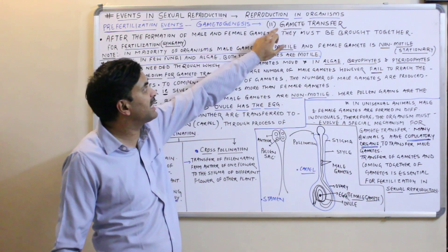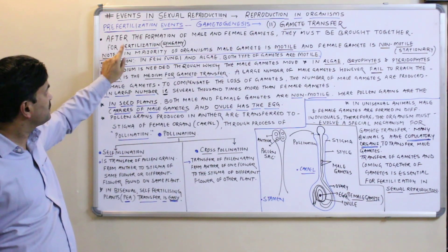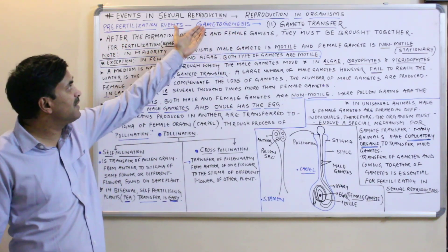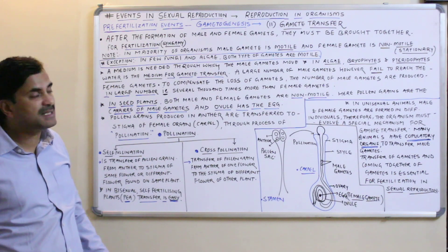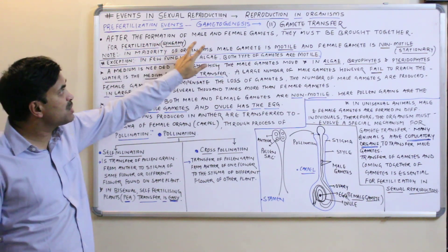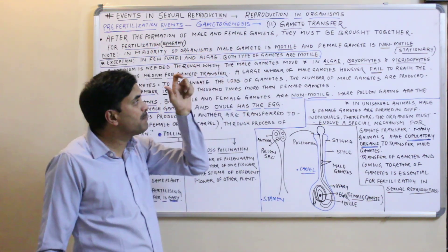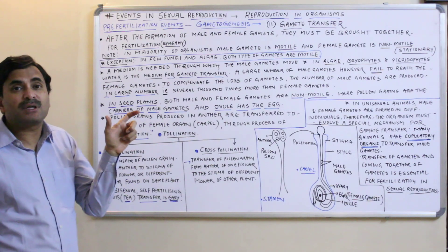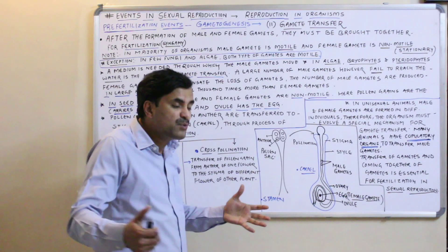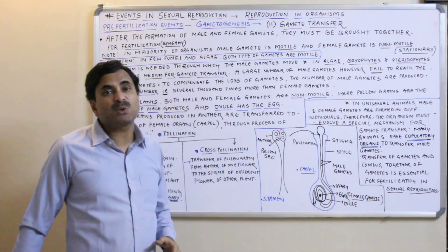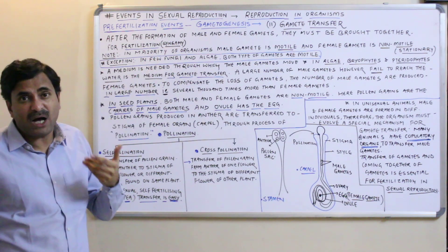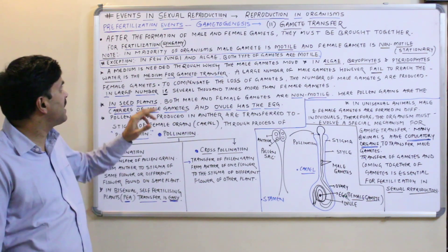We have already studied gametogenesis and learned how male and female gametes are produced. After their formation, male and female gametes must be brought together for successful fertilization. The fusion of the gametes is called syngamy. But how does this actually happen? That is what we need to understand.